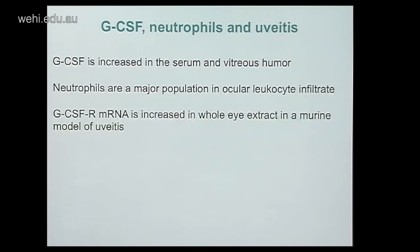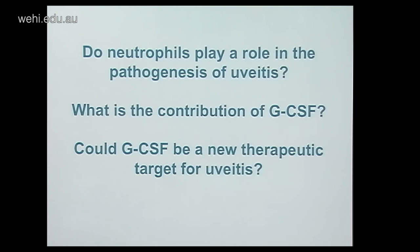Little is known about uveitis, GCSF, and the role of neutrophils, but there are some indicators it may be involved. GCSF is increased in the serum and vitreous humour, neutrophils are a major population in the ocular leukocyte infiltrate, and GCSF receptor mRNA is increased in whole eye extract of murine models of uveitis. This brings us to our key questions: do neutrophils play a role in the pathogenesis of uveitis? What is the contribution of GCSF? And could GCSF be a new therapeutic target?